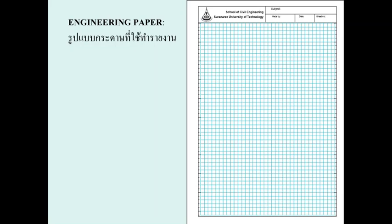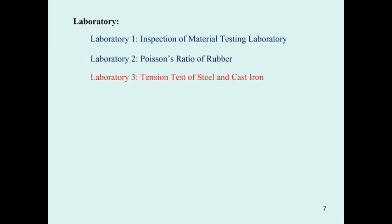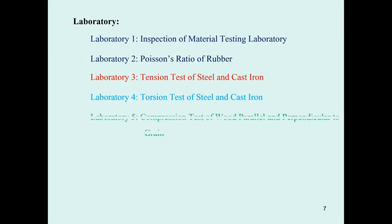This is engineer paper — everybody will use this to write their lab report. There are a total of 13 labs. The first two labs will be joined together: the inspection of the material testing lab and the Poisson's ratio lab. Then lab three is the tension test, lab four is the torsion test, and lab five is the compression test.